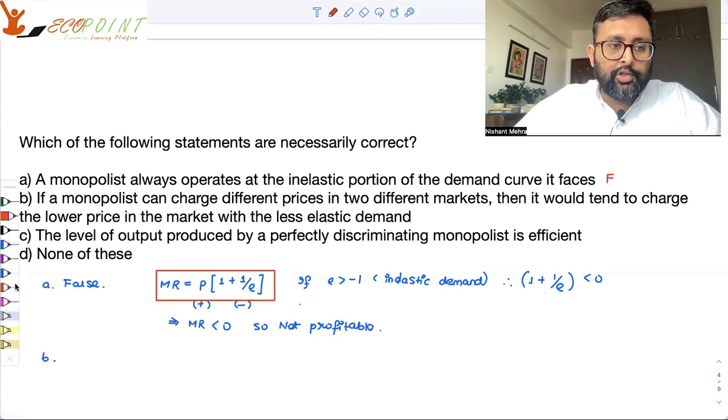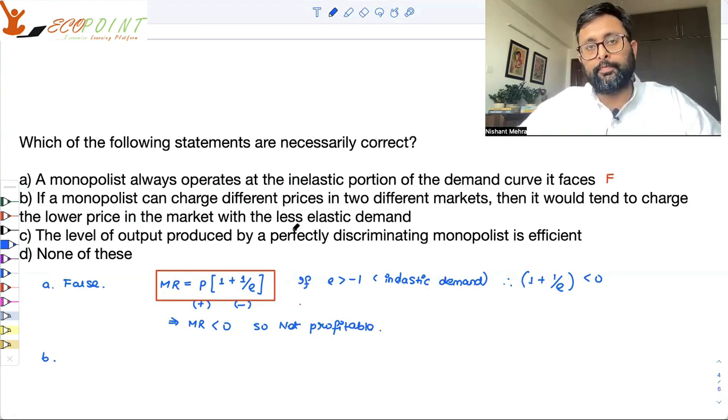If monopolists can charge different prices in two different markets, then it would tend to charge the lower price in the market with less elastic demand. No. If the monopolist is facing two different markets with two different elasticities, and in the market in which it has the lesser elasticity, it means that the consumers have more urgent demand.